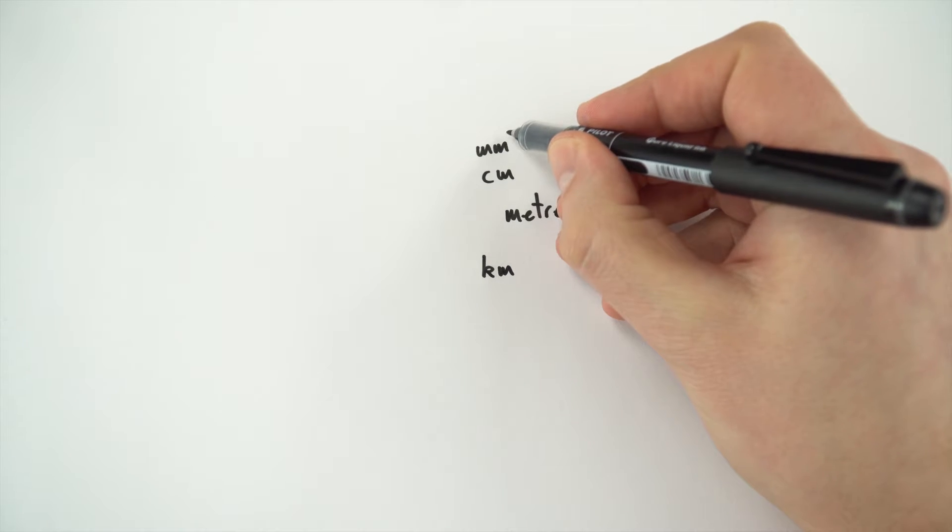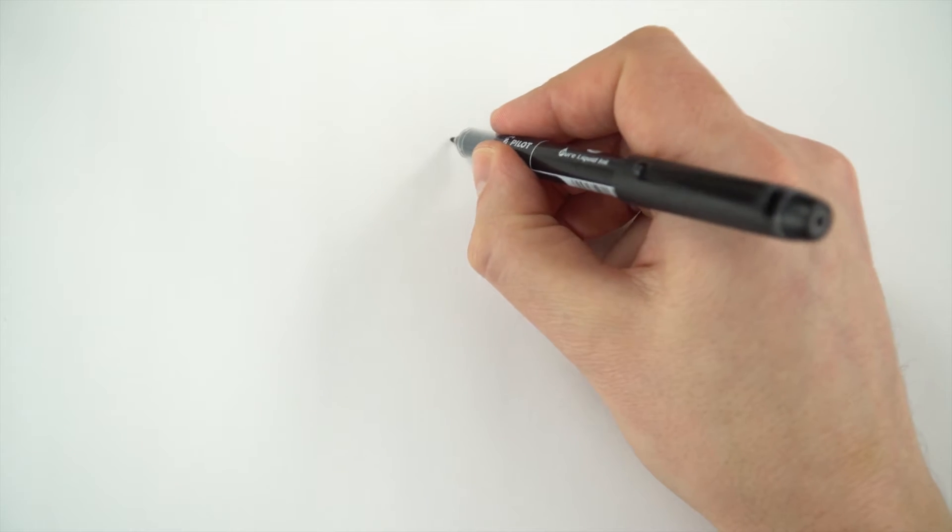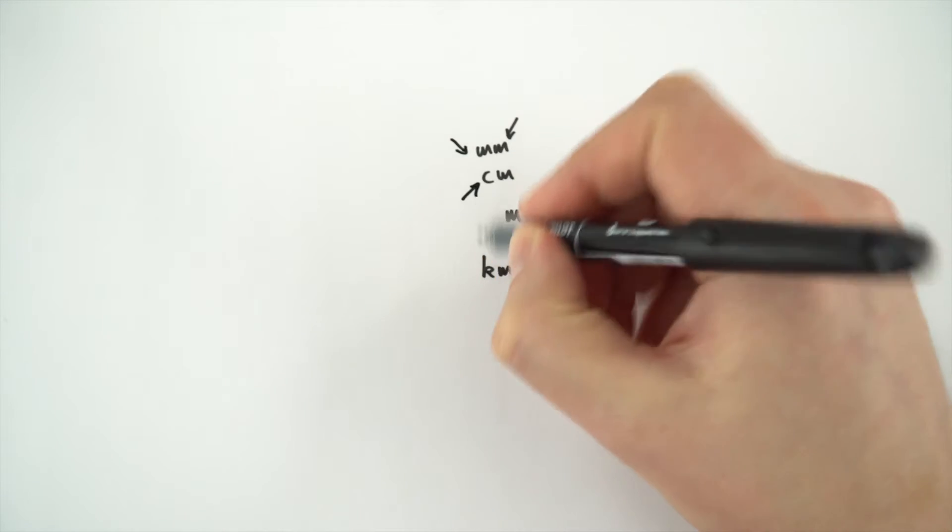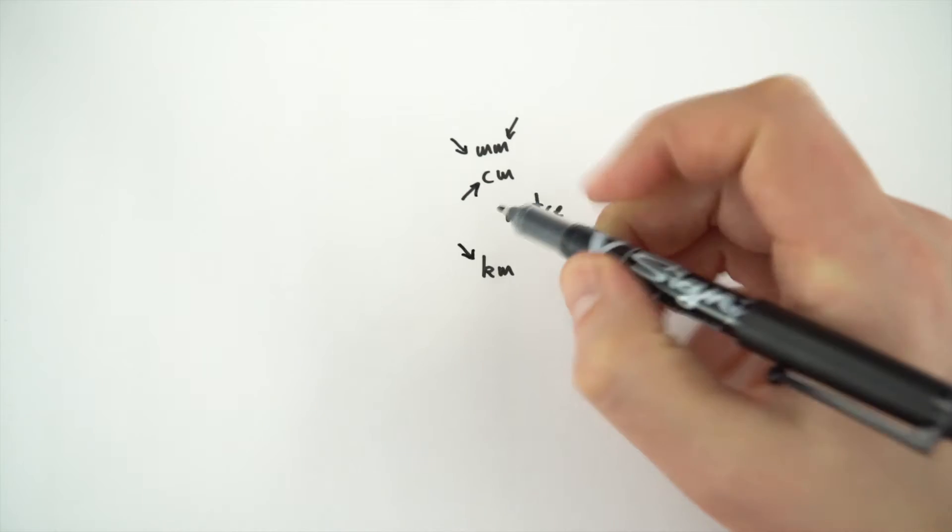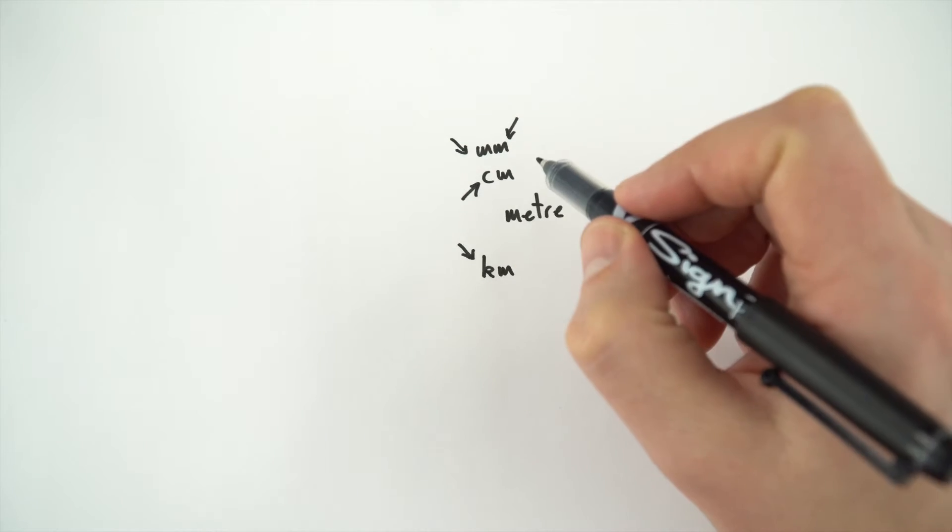Now the second letter, the m here, always stands for the metre. But then there's these letters in front, if it's a little m, a little c, or in this case, a little k. And these letters in front are what we call a prefix, and they tell us about the size of that unit.